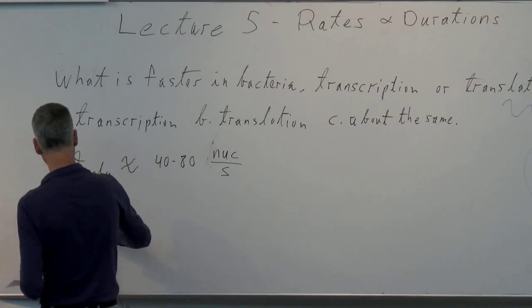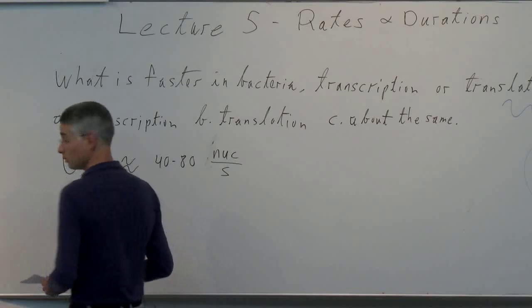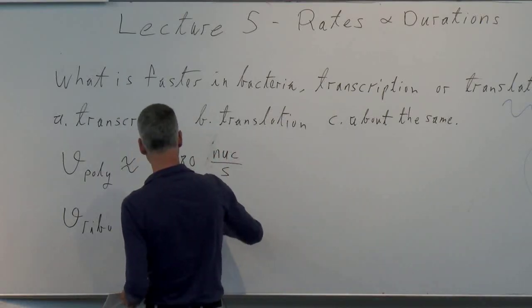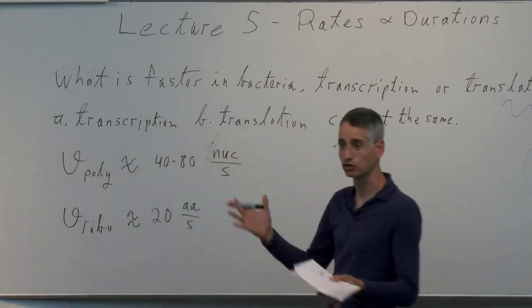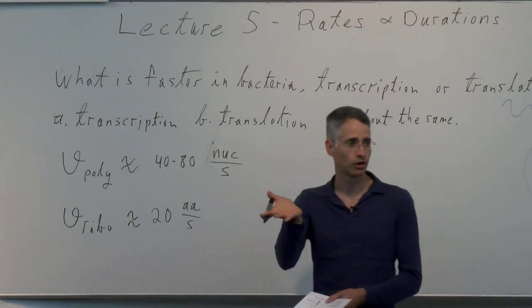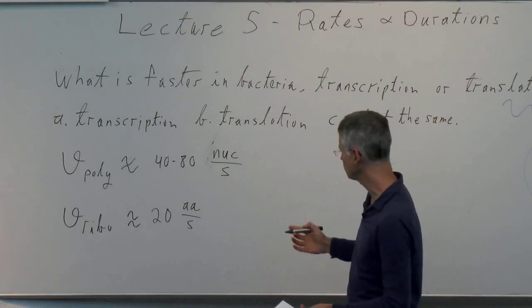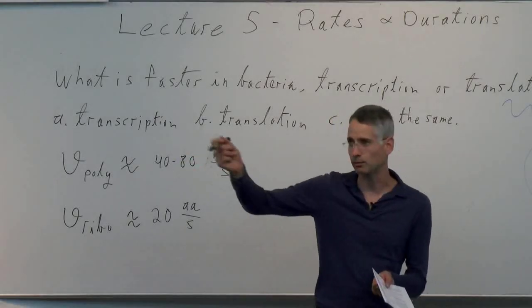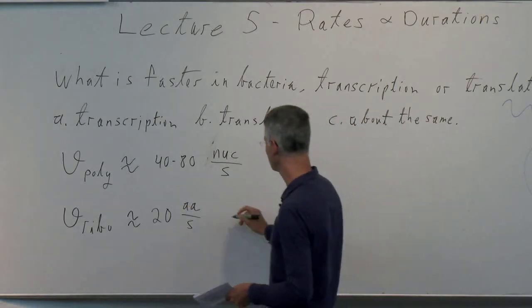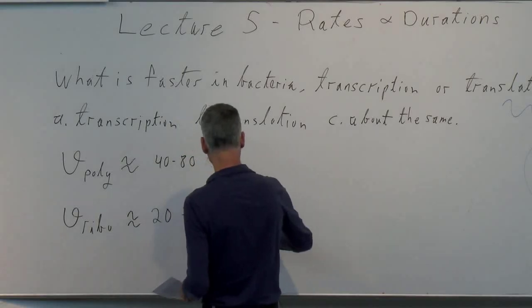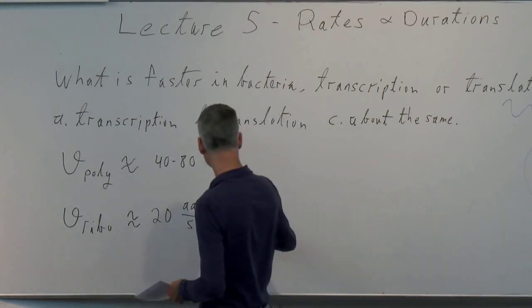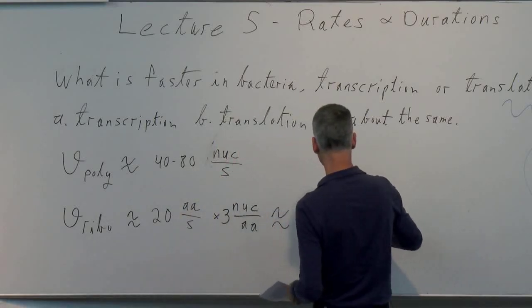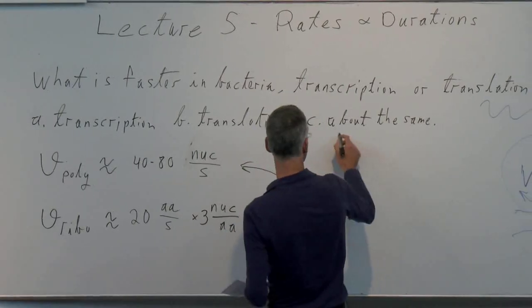The corresponding number for the ribosome is about 15 to 20 amino acids per second in bacteria during exponential growth. To put it on the same scale, multiply by 3 nucleotides per amino acid, giving roughly 60 nucleotides per second. So we find that the two rates are about the same.